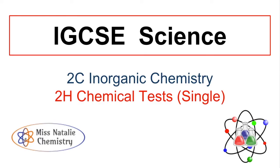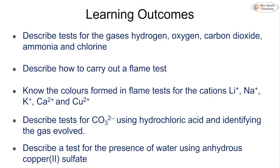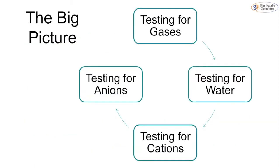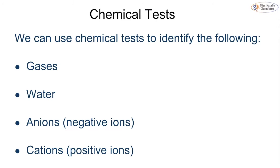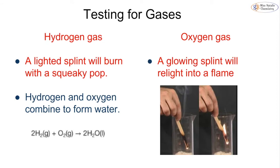In this video we're going to be looking at topic 2H chemical tests, which is part of the IGCSE chemistry course for Edexcel. We're focusing on the single science outcomes, so if you are a double or triple student be sure to check out the chemical tests video on those playlists on this YouTube channel. We'll cover tests for gases, flame tests, identifying anions such as carbonates, and how to test for the presence of water.